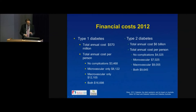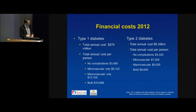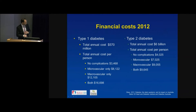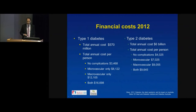Looking at the financial burden — these are older figures from 2012 from Diabetes Australia — the annual cost of type 1 diabetes is about $570 million. The annual cost per person with no complications is $3,500; with microvascular complications like eye and kidney disease it's just over $8,000; with heart disease and stroke it's $12,000; and with both it's almost $17,000. For type 2 diabetes, the total annual cost is $6 billion. This is a very common and very costly disease.